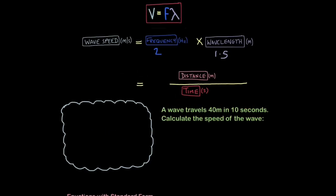So now let's try question 2. A wave travels 40 meters in 10 seconds. Calculate the speed of the wave. So which equation do we need now? Frequency times wavelength or distance over time? Well, we've got distance, 40 meters.